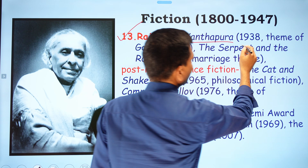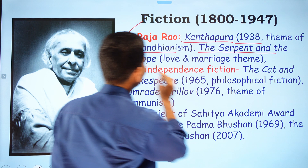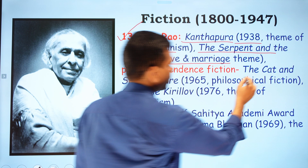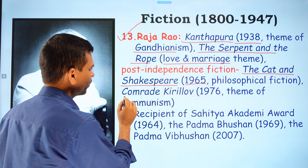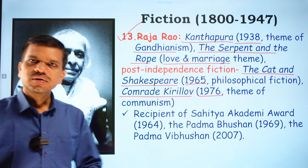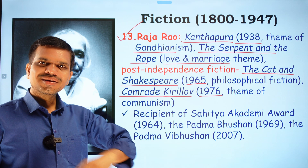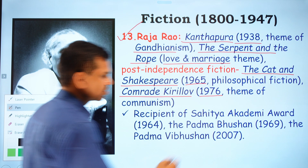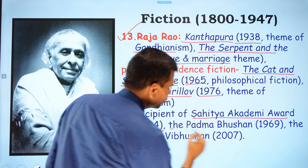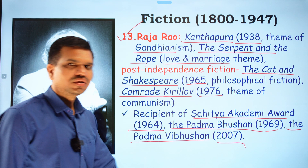Raja Rao's novels include Kanthapura (1936), based on Gandhianism; The Serpent and the Rope, which has a love and marriage theme; The Cat and Shakespeare (1965), an attempt at philosophical fiction; and Comrade Kirillov (1976), based on communism. Raja Rao received the Sahitya Akademi Award (1964), Padma Bhushan (1969), and Padma Vibhushan (2007).